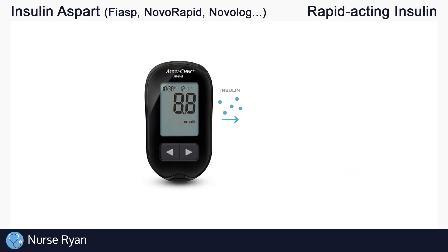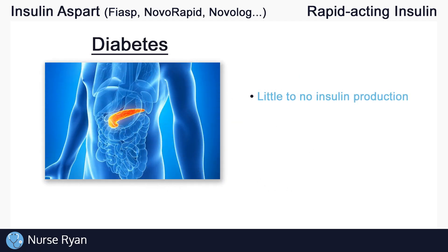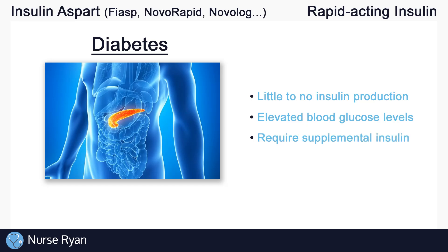Insulin lowers blood glucose levels. In patients with diabetes, typically type 1 diabetes, there's likely a problem with the pancreas and it isn't producing enough insulin. This means blood glucose levels would be too high, and that's why we need to administer supplemental insulin.